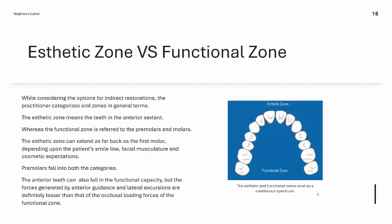When talking about the usage of various materials, we consider aesthetic zones and functional zones, which exist as a continuous spectrum. The aesthetic zone refers to the anterior sextet from canine to canine, while the functional zone refers to premolars and molars. The aesthetic zone can extend as far back as the first molar depending on the patient's smile line, facial musculature, and cosmetic expectations. Premolars fall into both categories.